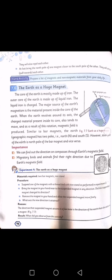Experiment number four: The Earth is a huge magnet. Materials required: two bar magnets, iron stand. Procedure: Suspend one of the magnets with a thread tied with iron stand as performed in experiment 2.